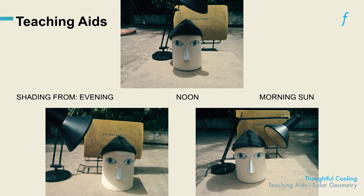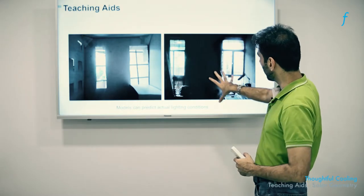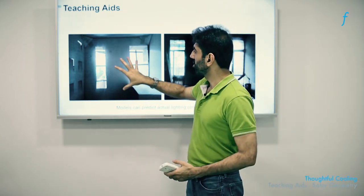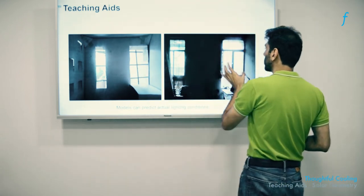This teaching aid here is just trying to indicate that models accurately made, scaled models, can really predict true life conditions very accurately. This is the actual office of a person in Delhi, and this is a scaled model of that same office. One can see that the lighting conditions that are prevalent in the scale model versus the real world are quite similar, which tries to emphasize the benefits of making scale models, something which again is a practice that has deteriorated over time and is not practiced too much.